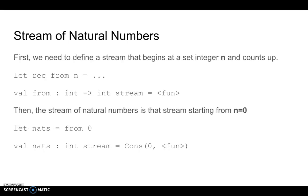Let's look at defining a stream of natural numbers. This is a stream that begins at the integer n equals 0 and counts up. So first, let's define the stream from, which can begin at any integer n and count up from it.